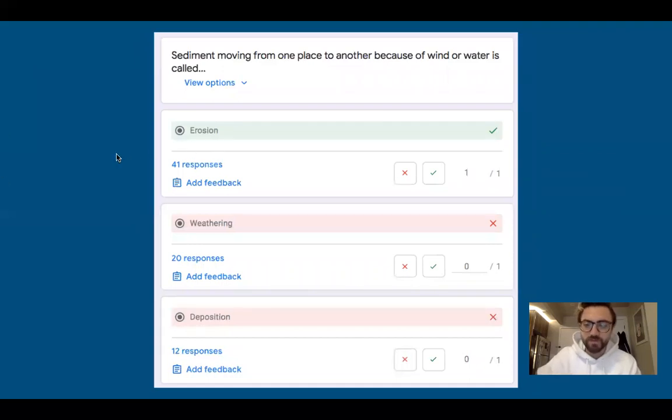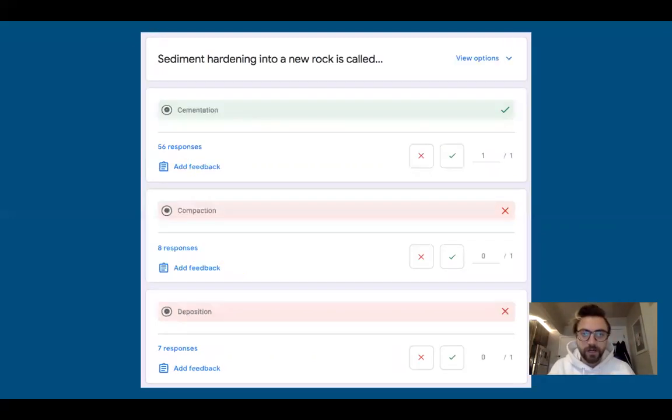This one confused most people. Erosion is when those sediments, after they break apart, flow with wind or water. It's like a three-step process: weathering, erosion, deposition. Let's do it again - weathering, erosion, deposition.